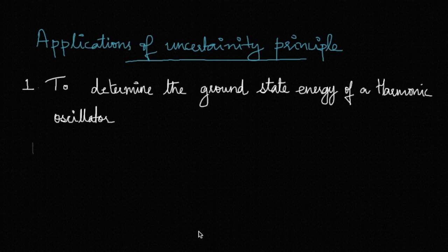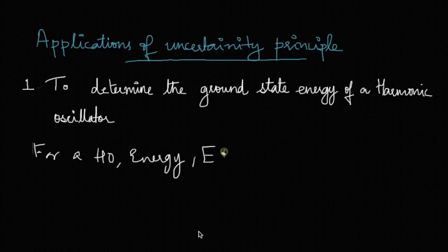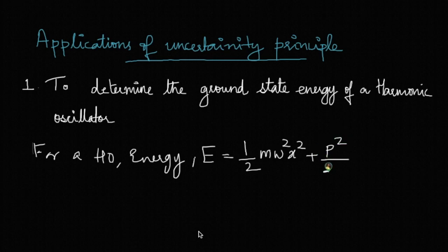Having learned the uncertainty principle, let's now try to do some applications. The first one is to determine the ground state energy of a harmonic oscillator. For a harmonic oscillator, the energy is given by E = ½mω²x², the potential energy, plus p²/2m, the kinetic energy.